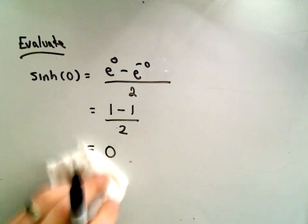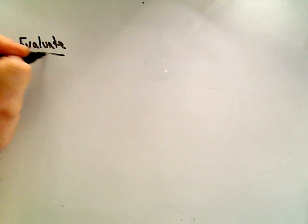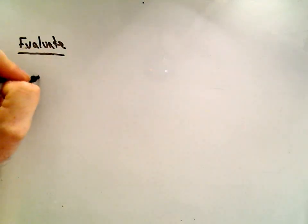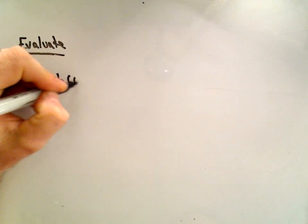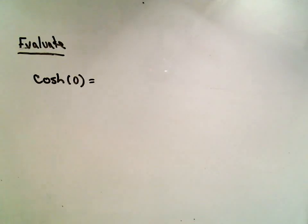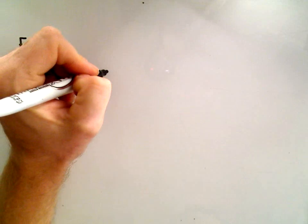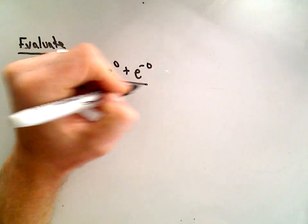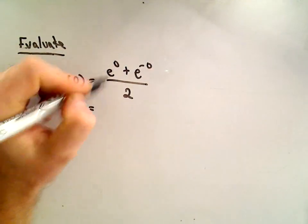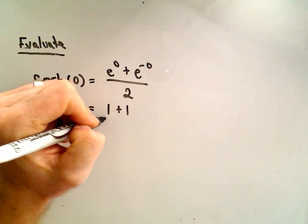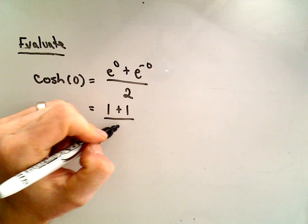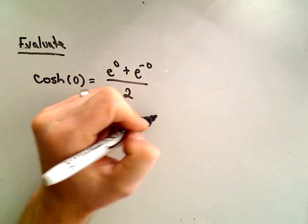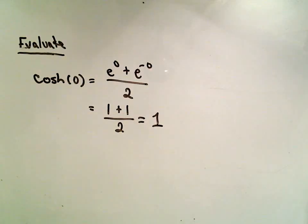And that simply gives us 0. So, all right, easy enough. I mean, this is basically, if they ask you to evaluate a hyperbolic function, this is what you're going to have to do, is just use the equivalent definition and plug it in there. So the same way, hyperbolic cosine, that'll be e to the 0 plus e to the negative 0 over 2. That's e to the 0, another e to the 0, which is 1 and 1 over 2. So we'll get 2 over 2, so hyperbolic cosine of 0 equals 1.